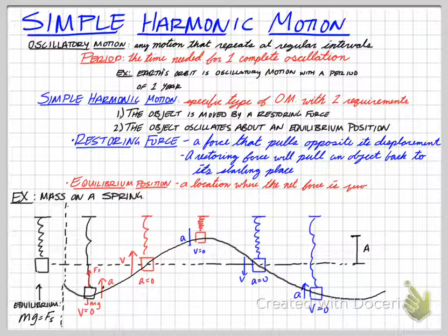Now, just to note, the distance from equilibrium to our maximum displacement is called the amplitude. So, we're going to talk about these graphs a little bit more.